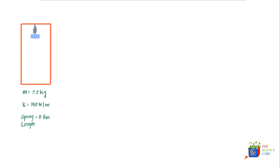In this problem we have an elevator with a spring attached to the ceiling and a mass m attached to the spring. The mass is 7.2 kilograms, the spring constant is 150 newtons per meter, and the unstretched length of the spring is 0.8 meters.